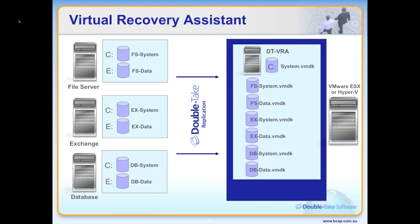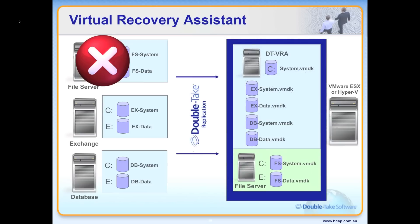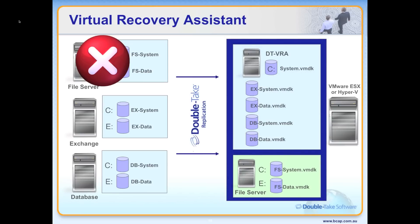Double Take Availability then replicates data from production servers directly to the replica VMDK files. When a failure occurs to a production server, we can fail over to the replica virtual machine. The Virtual Recovery Assistant will inject VMware drivers, disconnect from the VMDK files, and start up the replica virtual machine.